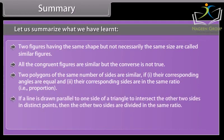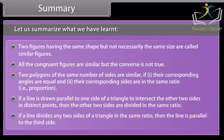If a line is drawn parallel to one side of a triangle to intersect the other two sides in distinct points, then the other two sides are divided in the same ratio. If a line divides any two sides of a triangle in the same ratio, then the line is parallel to the third side.